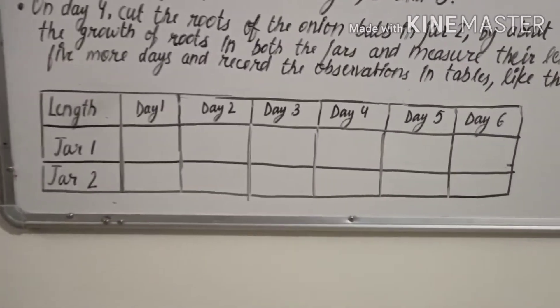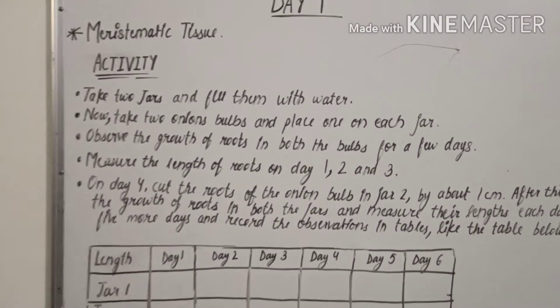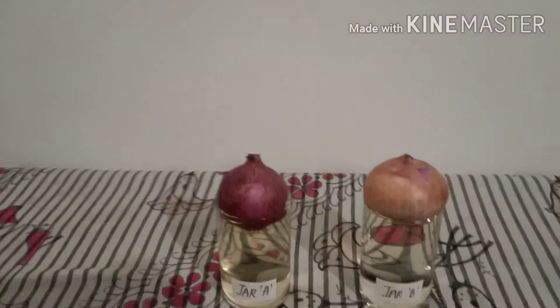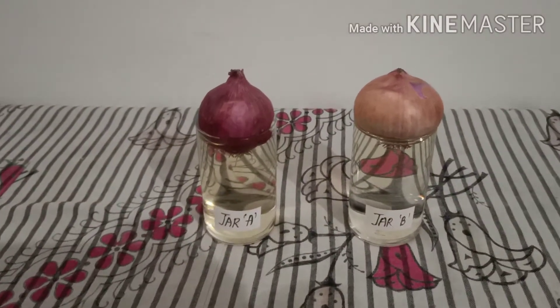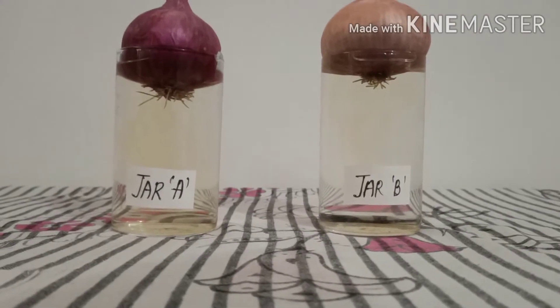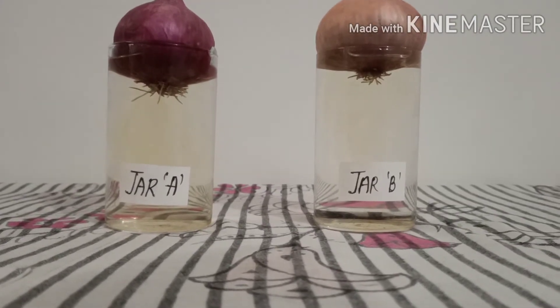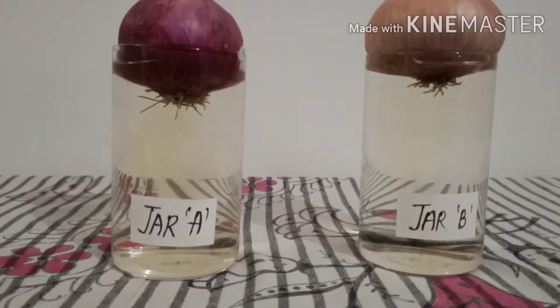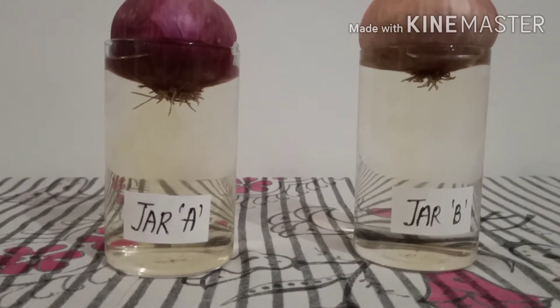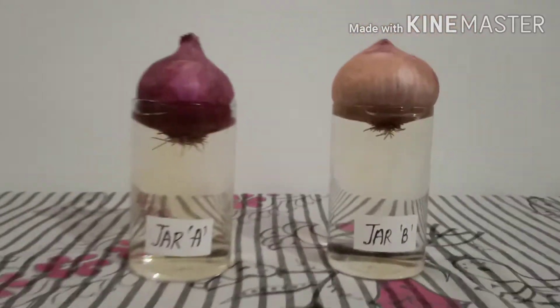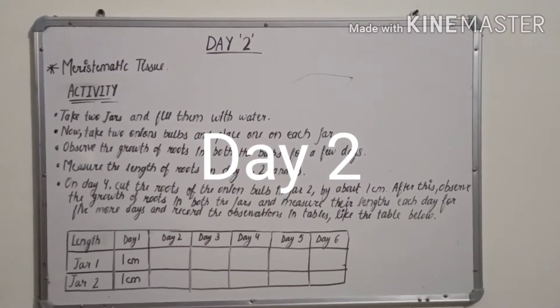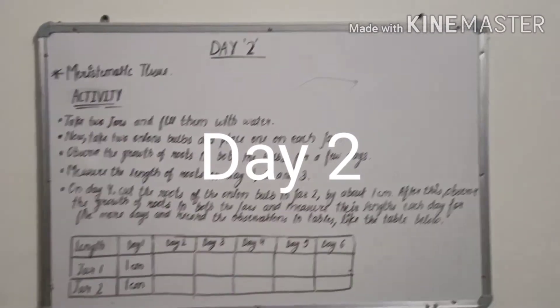We have done the first and second steps. As you can see, we have two jars — jar A and jar B — in which we have placed two onion bulbs, and the roots are about one centimeter. Hello everyone, this is day two and we are going to do the third and fourth steps of this activity.